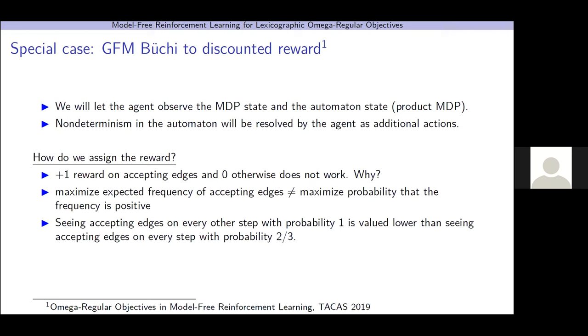So, as a special case, let's consider having only one objective. This is what we tackled in our TACAS 2019 paper. We're going to let the agent observe the MDP state and the automaton state. This forms the product MDP. We'll have non-determinism in the automaton be resolved by the agent as additional actions. So, all we're left with is how do we assign the reward. An initial naive attempt would be to get plus one reward on accepting edges and no reward otherwise. But this doesn't work.